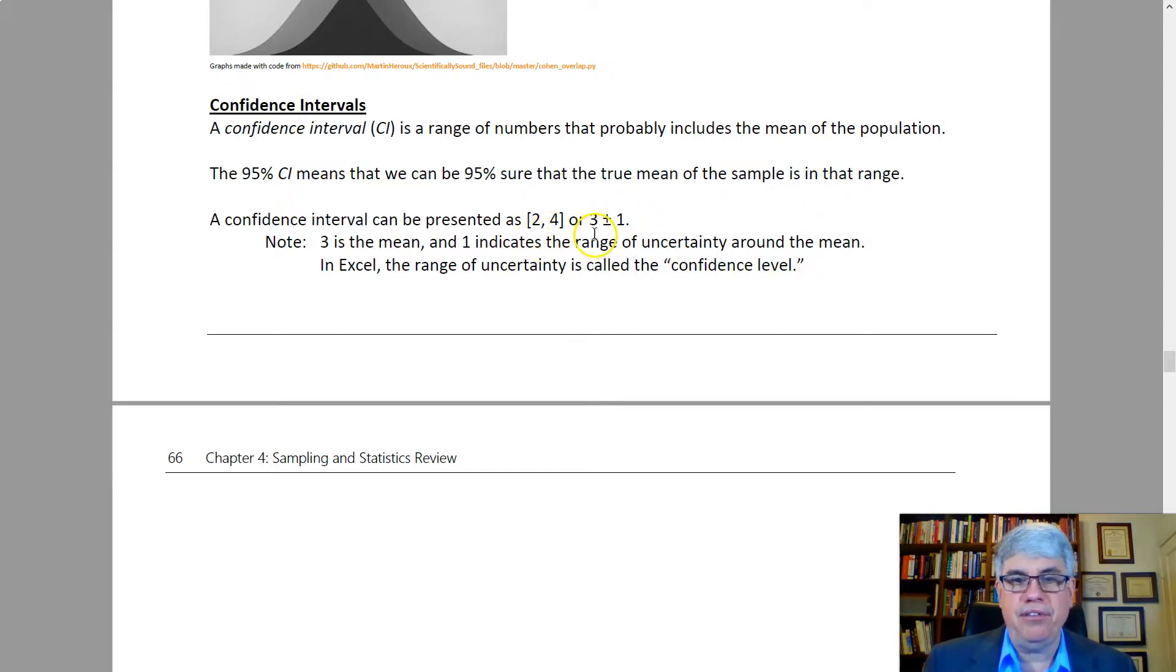Or we might say the average is three plus or minus one. In our sample, people had on average three coins in their pocket, but we didn't have a super big sample. So the true average of the whole population might be between two and four, three plus or minus one.